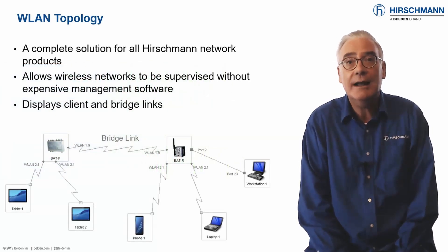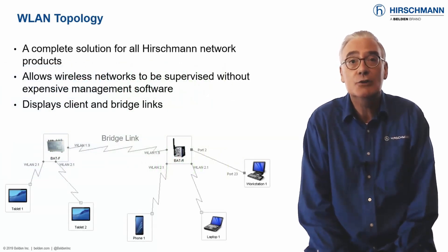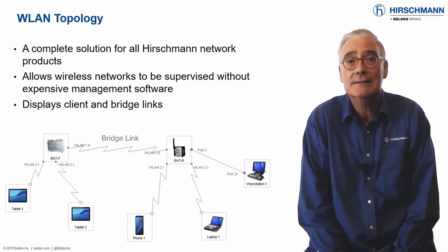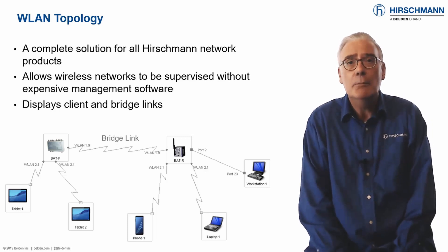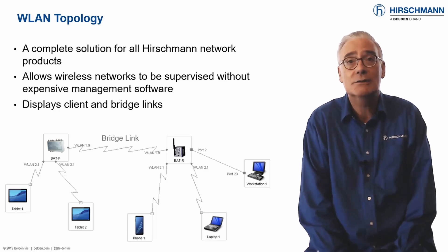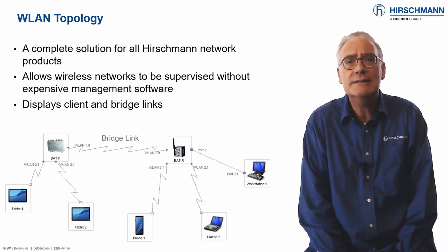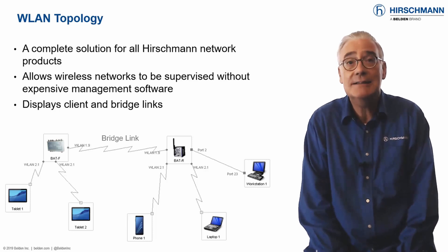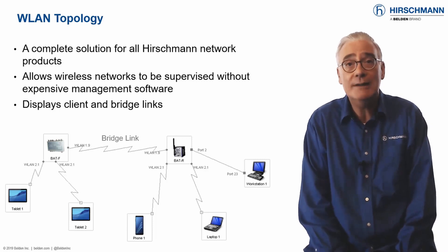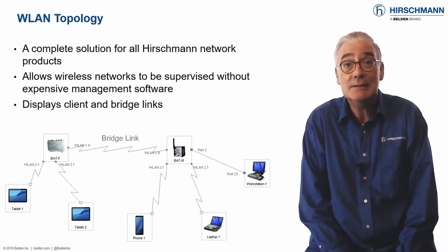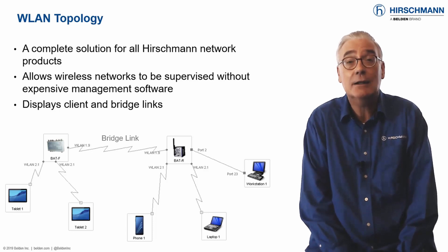Traditionally, industrial HiVision has been used to display the topology of cabled links. But it also has the capability to show wireless connections. The auto-topology mechanism will discover and display both point-to-point links and connections between access points and clients.